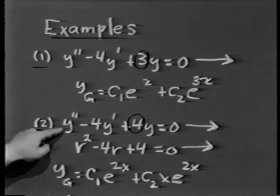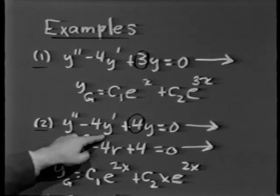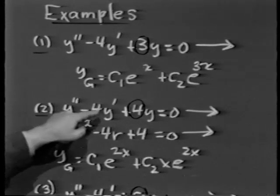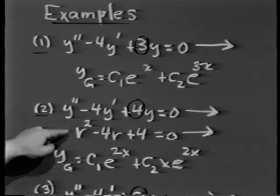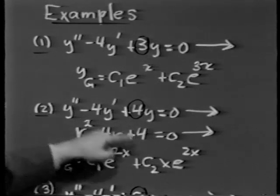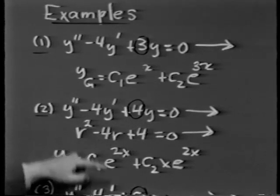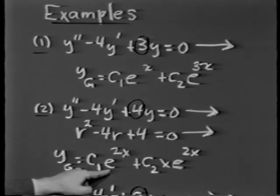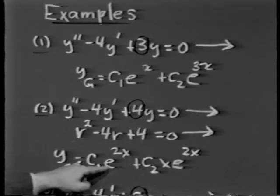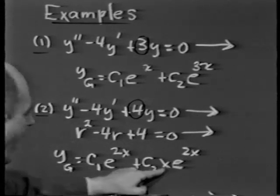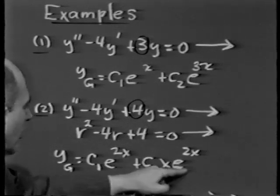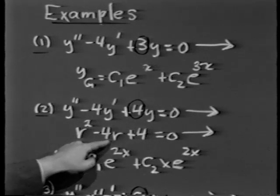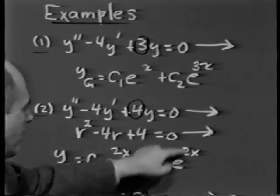For Case 2: y double prime minus 4y prime plus 4y equals 0 leads to r squared minus 4r plus 4 equals 0. That factors into r minus 2 squared equals 0, so r equals 2 is a multiple root. In this case, e to the 2x and x e to the 2x are linearly independent solutions, and the general solution is c1 e to the 2x plus c2 x e to the 2x.